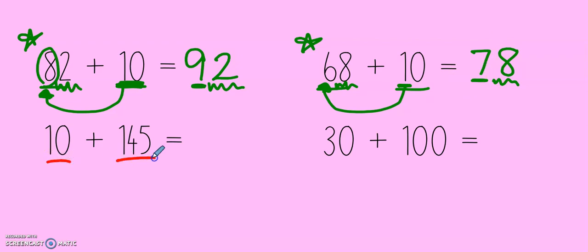10 plus 145. I know that 145 is larger. Now, I have a 10. That means I'm going to add it into the tens place. I still get to keep my 100. In the tens, I used to have 4, but now I have one more. 4 plus 1 is 5. And then I get to keep my 5 at the back. 100, 55.